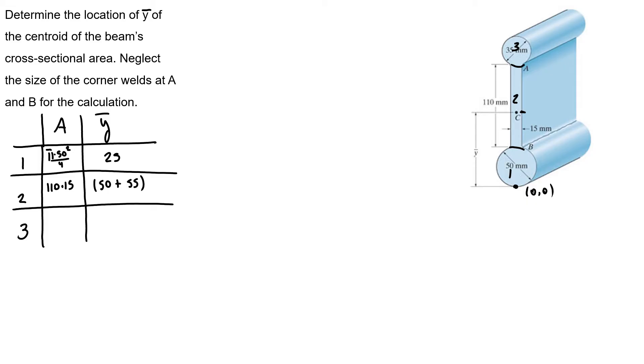And my third area is π times 35 squared over 4. And then my y-bar will be 50 plus 110 plus the radius of my circle, which is 17.5.